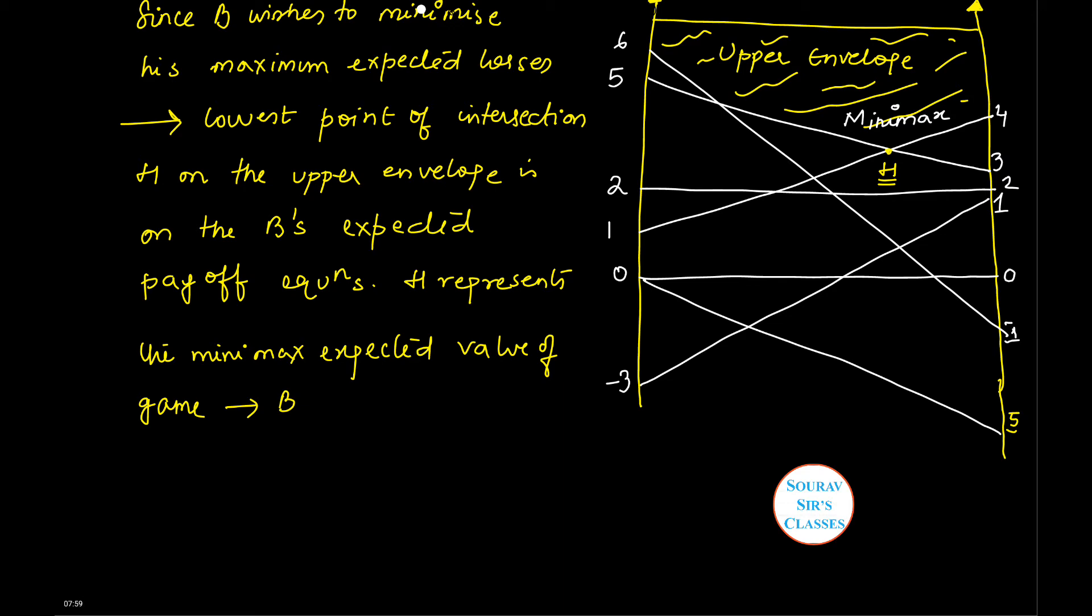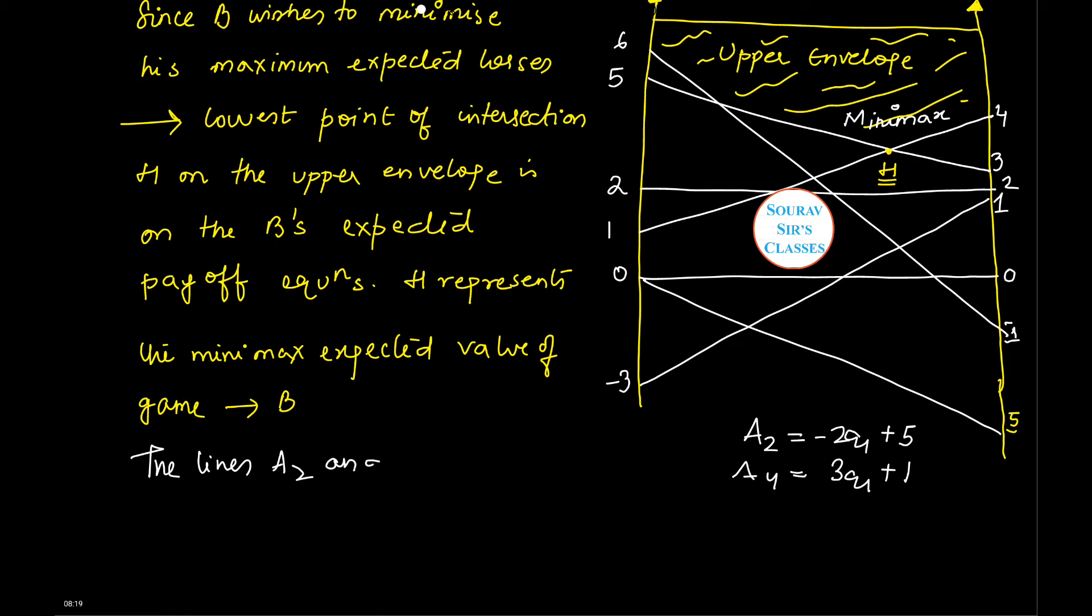So the lines A2, which was given by minus 2q1 plus 5, and A4, which is given by 3q1 plus 1. Now the lines A2 and A4 passing through define the two relevant moves A2 and A4 that alone A needs to play.